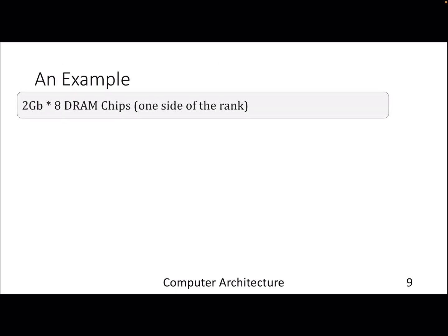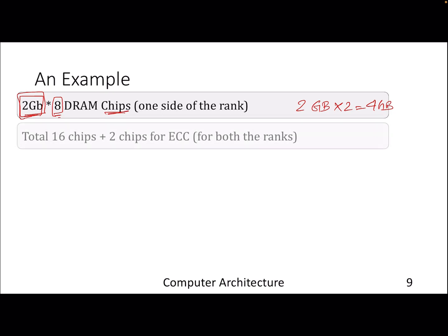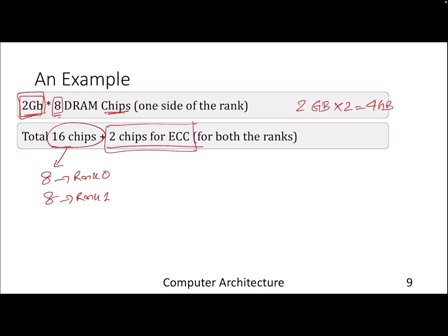Let's take an example: a 2 gigabit — not gigabyte — times 8 DRAM chips, giving a total 2 gigabyte capacity. Each chip stores 2 gigabit and there are 8 DRAM chips on one side of the rank. Both sides together give 4GB capacity. From the DIMM perspective there are 16 chips total — 8 for rank 0 and 8 for rank 1. There are also two additional chips for ECC (error correcting codes), which help detect and correct faulty cells in the DRAM.